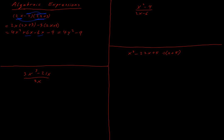The x terms sum to zero, leaving 4x² minus 9. Going back to the original question — 2x minus 3 multiplied by 2x plus 3 — we can see this matches the pattern (a minus b)(a plus b), which equals (a plus b)(a minus b). This is what we call DOTS: difference of two squares, and it results in a² minus b².